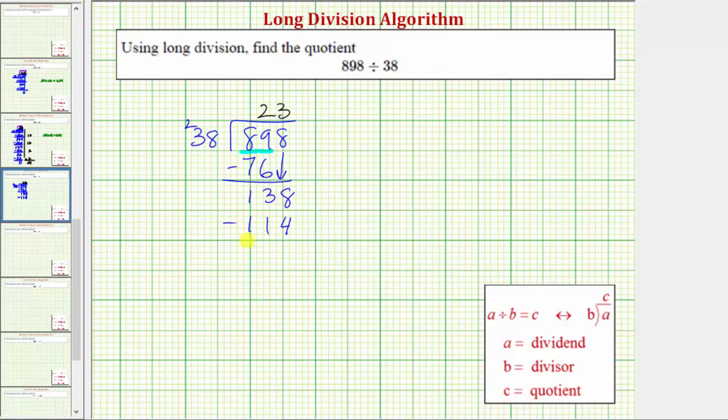And we subtract. Again, if this difference is less than 38, we know the 3 is correct. And notice how the difference is 24, which is less than 38, which means the 3 is correct.